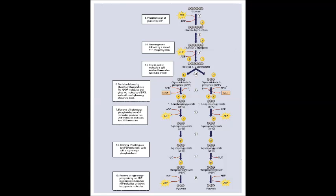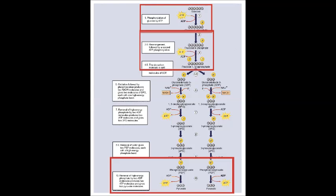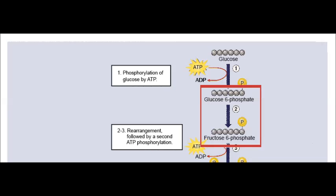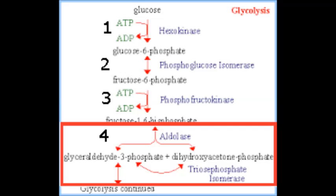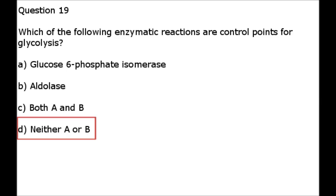Control points for glycolysis are at stages 1, 3, and 10. Glucose 6-phosphate is a precursor of fructose 6-phosphate in stage 2. A is not a correct answer. Aldolase is part of stage 4, therefore not a control point for glycolysis. The correct answer is D, neither A nor B.